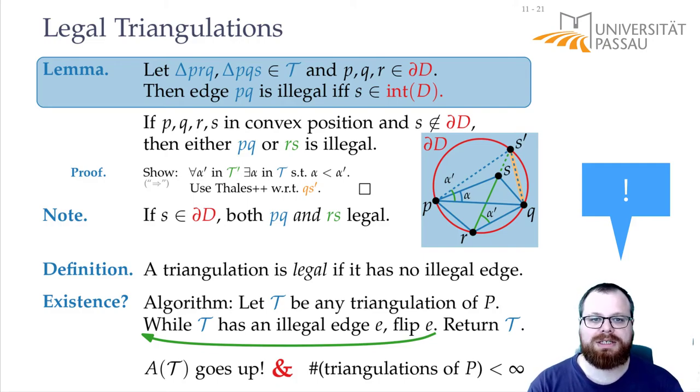You can get a bound on the number of triangulations by the Catalan numbers, but if you only need that it's finite, you can imagine, take your n points, there are n squared possible segments, and each of those can be in the triangulation or not. So an almost trivial upper bound on the number of triangulations is 2 to the n squared, because you only have that many combinations of segments that are in the triangulation or not.